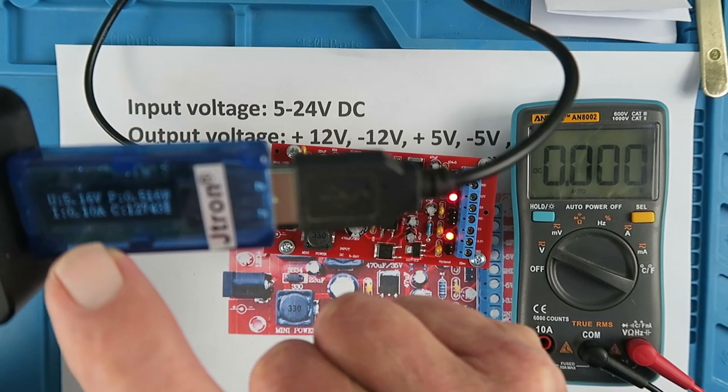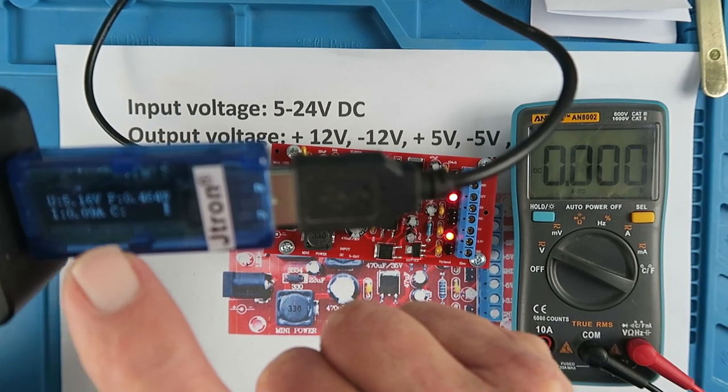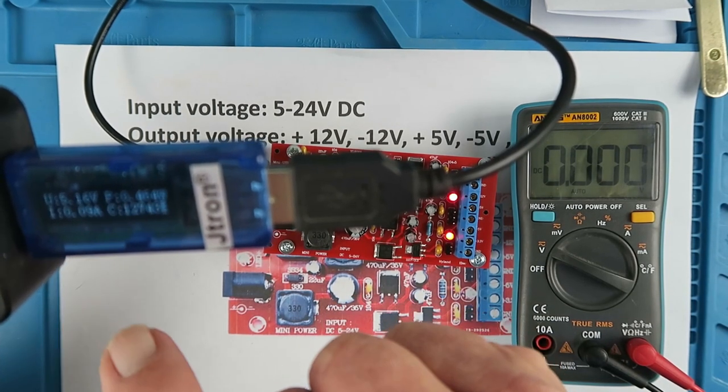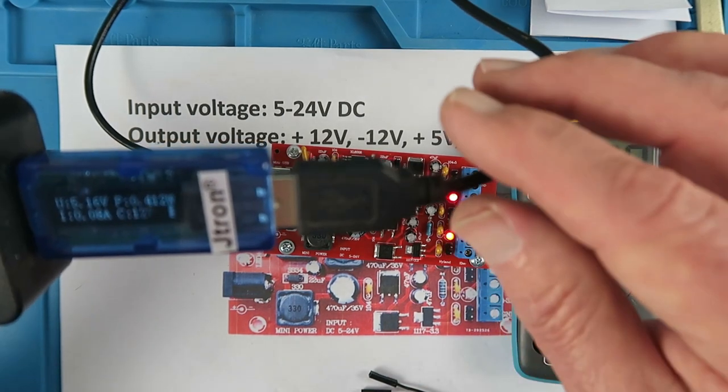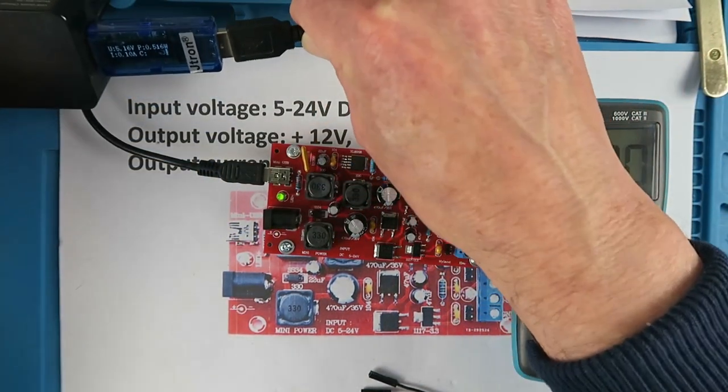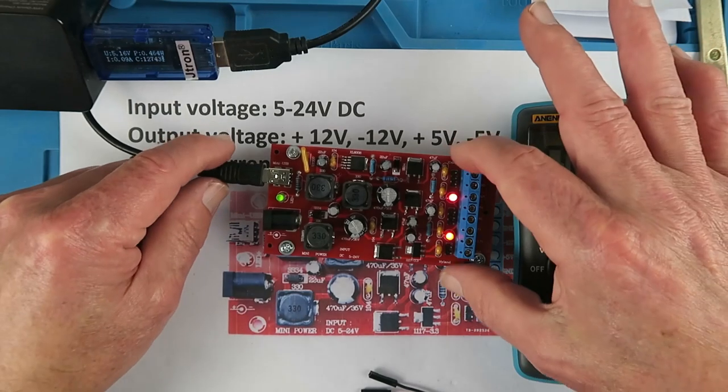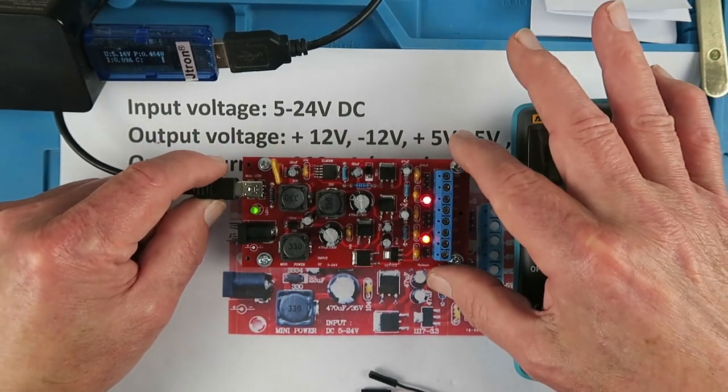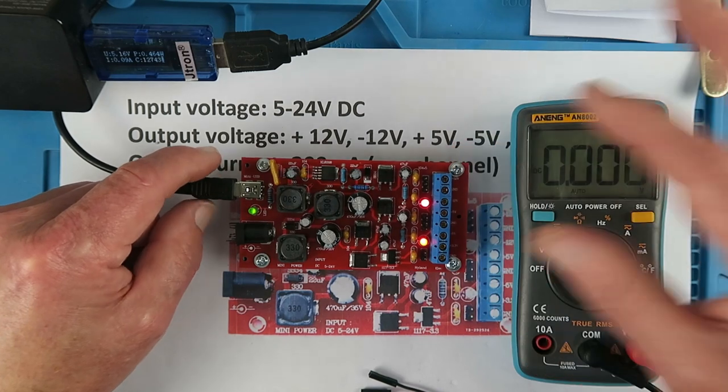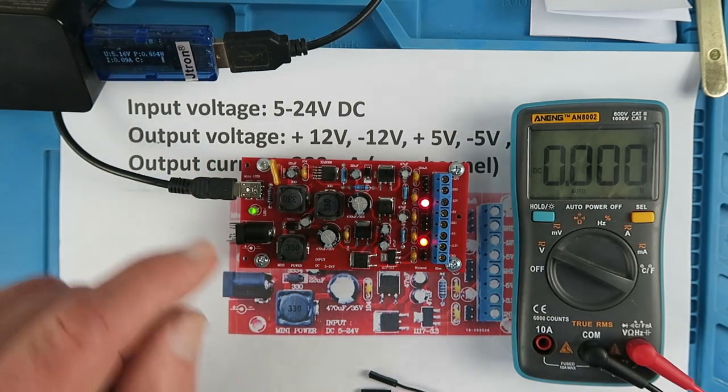Very briefly it went up to nearly half an amp and now it's settled back down to about 100 milliamps and that is caused by the boost converter as it kicks into life. We can see our LEDs all on which is good news. Let's check our output voltages.